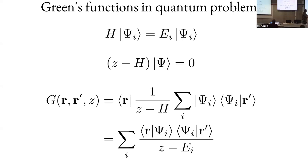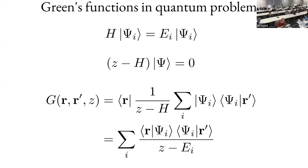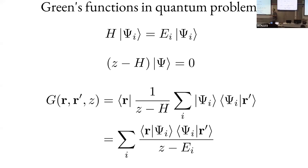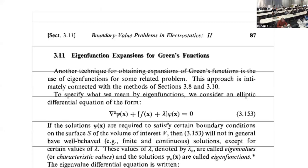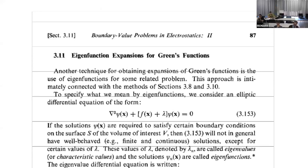The Green's function is written in terms of the eigenstates and eigenvalues of the original Hamiltonian. Not surprisingly, the eigenvalues appear in the denominator because G is the inverse of H. We haven't solved anything yet, because to know the Green's function we have to solve the many-body problem. Formally, G contains poles at all the energies of the system — the ground state energy, the first excited state, and so on.